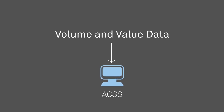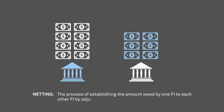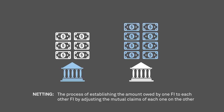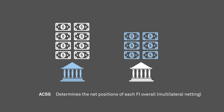Aggregate volume and value data is entered into ACSS streams by each direct clearer that is owed funds as a result of payment exchanges. The next step in clearing is a process called netting. At the end of the daily exchange process, ACSS entries, including those for POS and online payments, are used to determine the net positions of the direct clearers. Netting is the process of establishing the amount owed to each FI by adjusting the mutual claims of each one on the other. The ACSS determines the amounts owing between each pair of direct clearers — a process known as bilateral netting — and also determines the net positions of each FI overall, referred to as multilateral netting. The multilateral net position of each direct clearer is called its clearing balance.